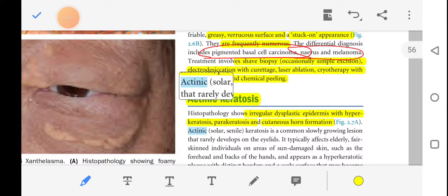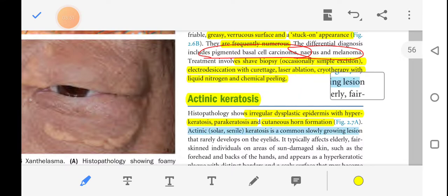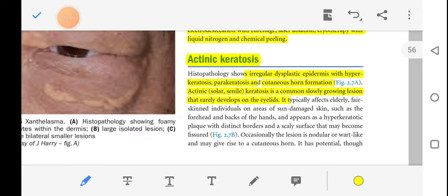Actinic solar senile keratosis is a common slowly growing lesion that rarely develops on the eyelid. It typically affects the elderly, fair-skinned individuals on areas of sun-damaged skin such as the forehead and back of the hands, and appears as hyperkeratotic plaque with distinct borders and a scaly surface that may become fissured.